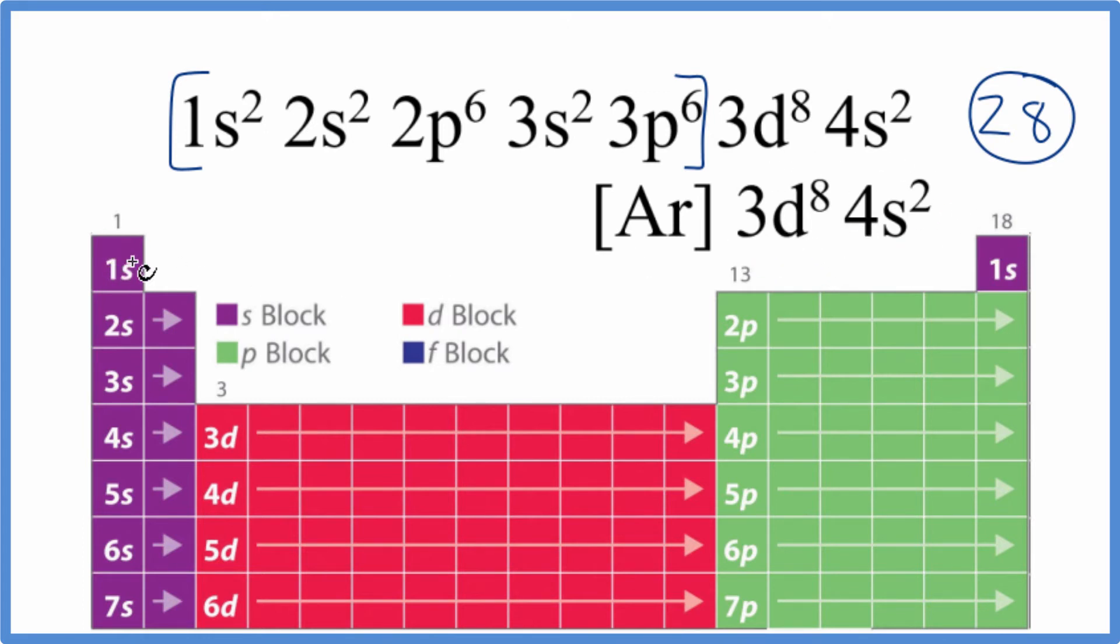So we go 1s¹, 1s² - s is full with 2. Then 2s², and p holds up to 6, so we have 2p⁶. Then 3s², 3p⁶. Here's our 4s², and we end in 3d⁸.